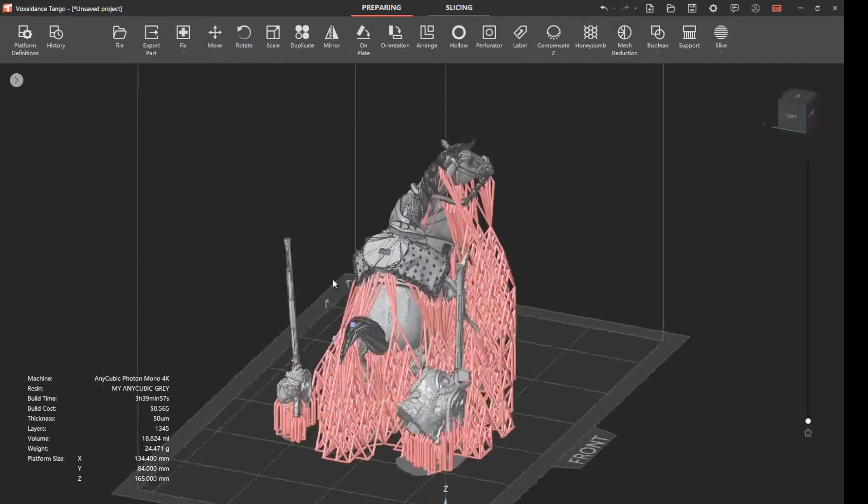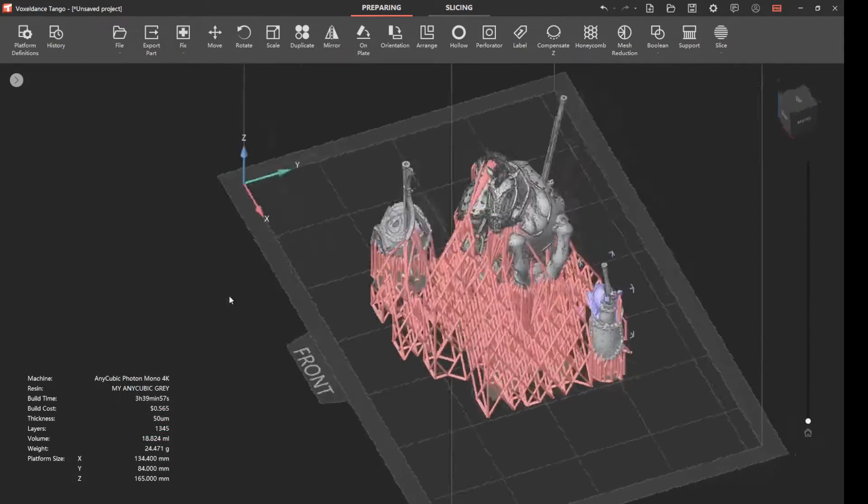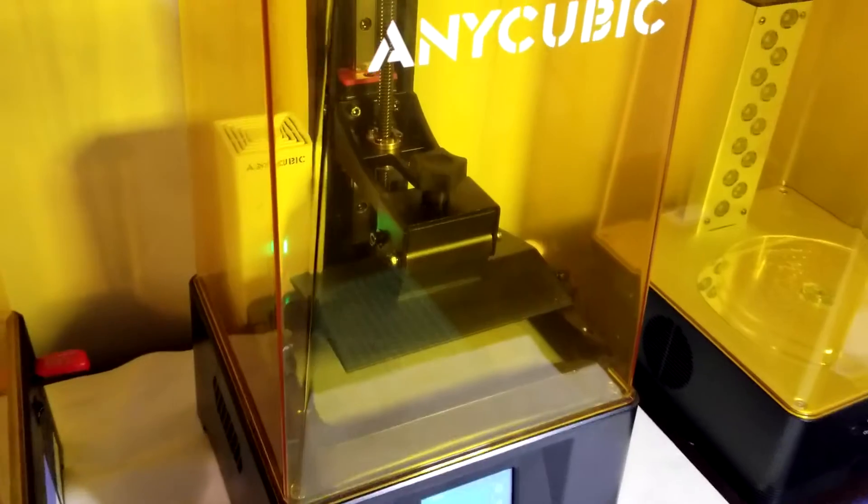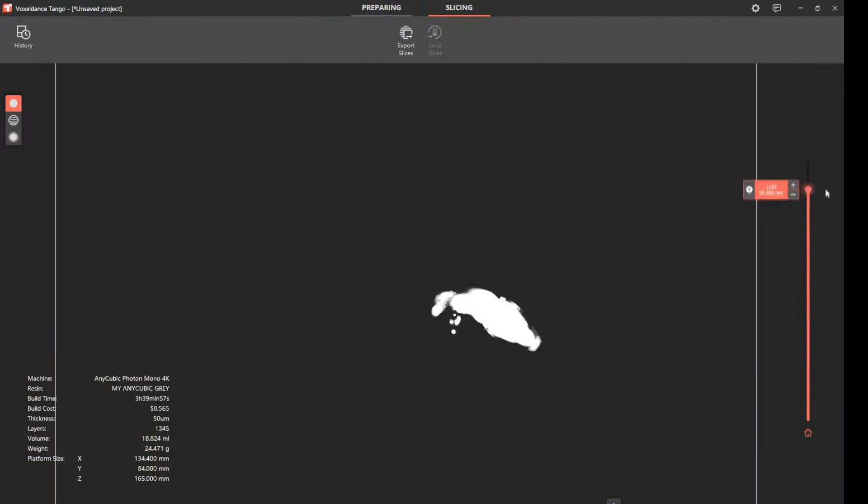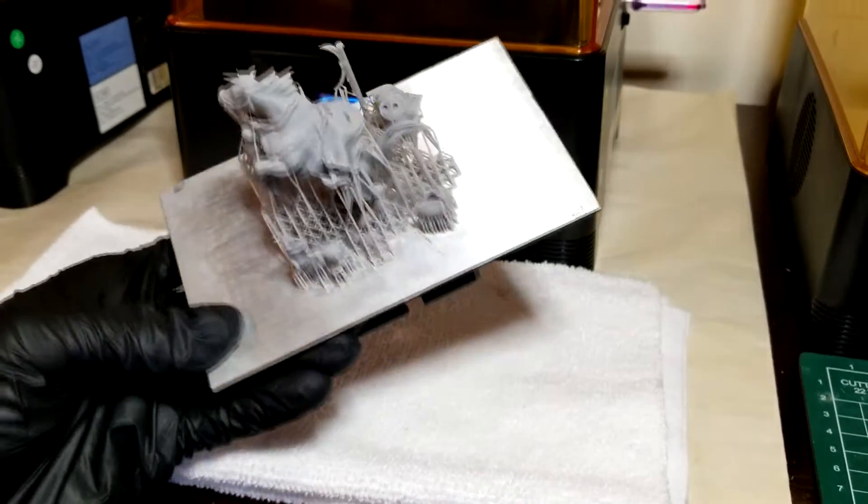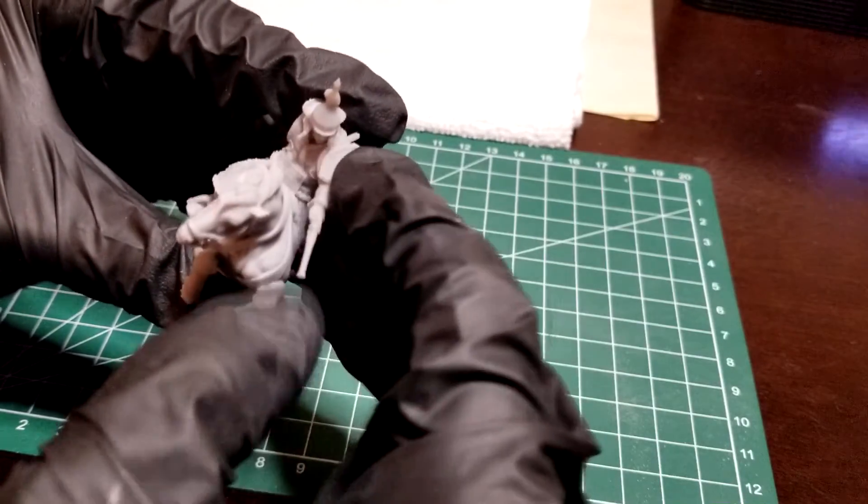So now, the real test is to see if this is going to print well. I'm going to use the default settings for my printer, the Anycubic Photon Mono 4K, and slice the file right in Tango slicer. The results? Well, actually, they're quite good. I'm very impressed.